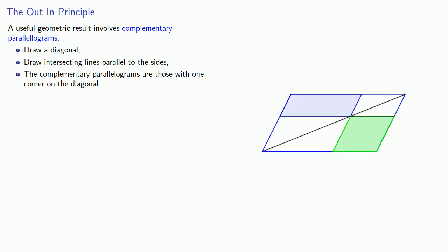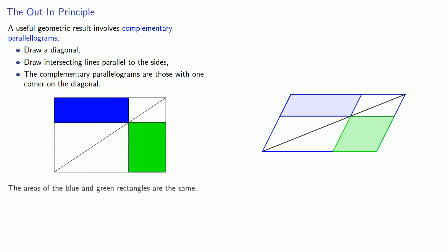The useful geometric result is that the areas of the complementary parallelograms are equal. In this case, that means the blue and green parallelograms have the same area. Now in Chinese sources, our parallelogram is typically a rectangle. And once again, the areas of the blue and green rectangles are the same.